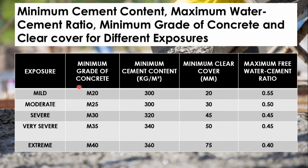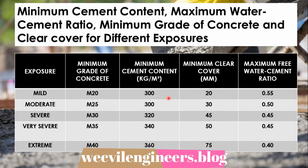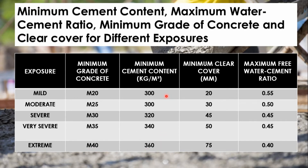For mild exposure, it recommends a minimum grade of concrete as M20, where M stands for mix ratio and 20 stands for compressive strength of a 150 mm size cube at 28 days, expressed in Newton per mm square. 300 kg of cement must be used in 1 meter cube of concrete, which is equivalent to 0.208 meter cube. Clear cover should be greater than or equal to 20 mm, and the maximum water cement ratio is 0.55.